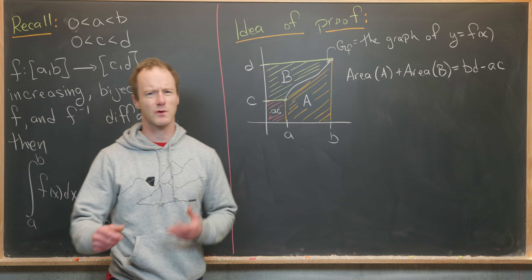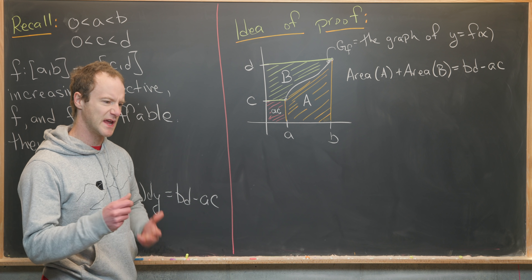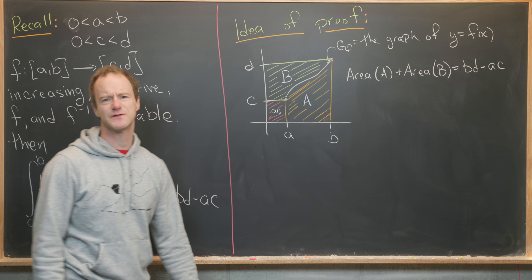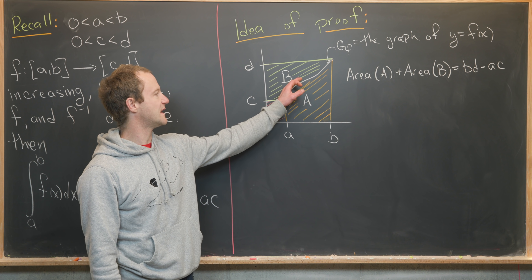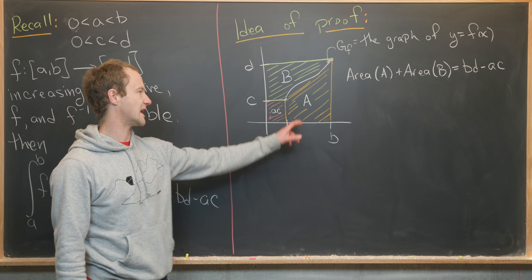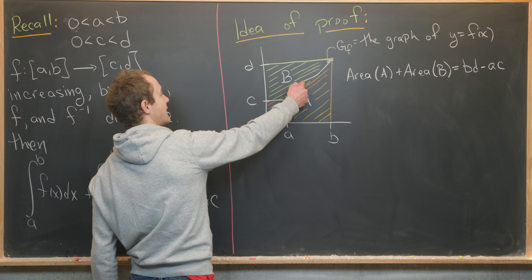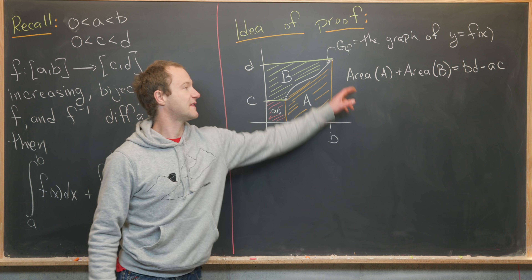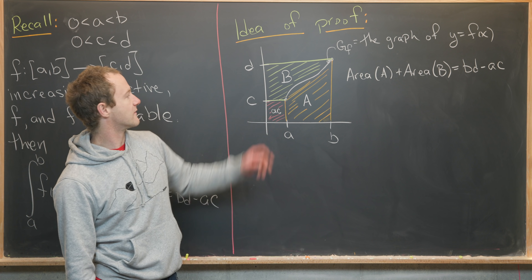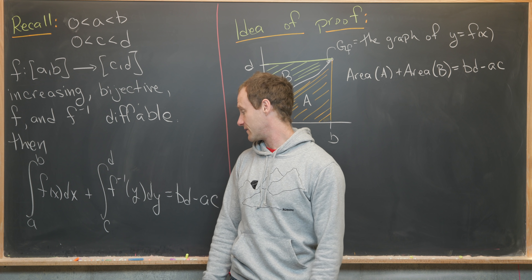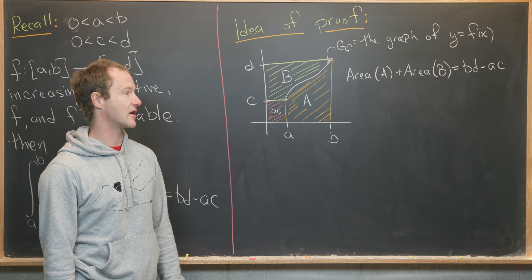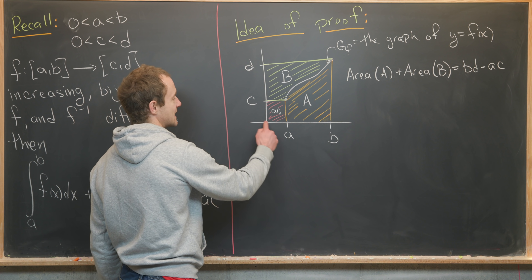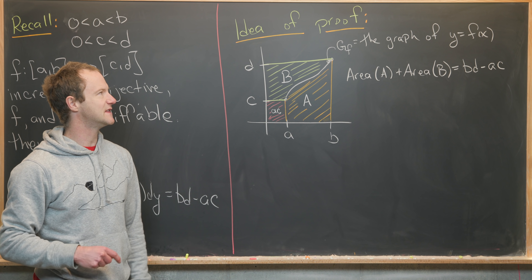We provided a proof of this in a previous video, but I want to recall the intuition behind that proof so we can look at it in a different way today. We put the graph y = f(x) in the plane, called that G_f. We look at the region between that curve and the x-axis — shaded orange, labeled A — and the region to the left of that curve and to the right of the y-axis, labeled B, shaded yellow. The area of A is the first definite integral, and the area of B is the definite integral involving the inverse function. Together, area A plus area B equals b·d minus a·c — the large rectangle minus the smaller rectangle.